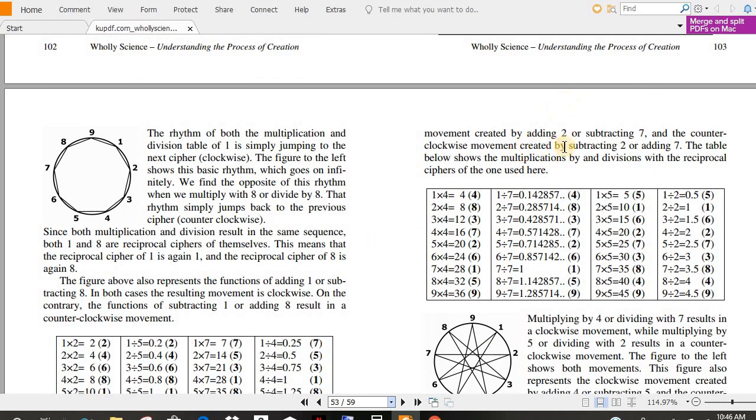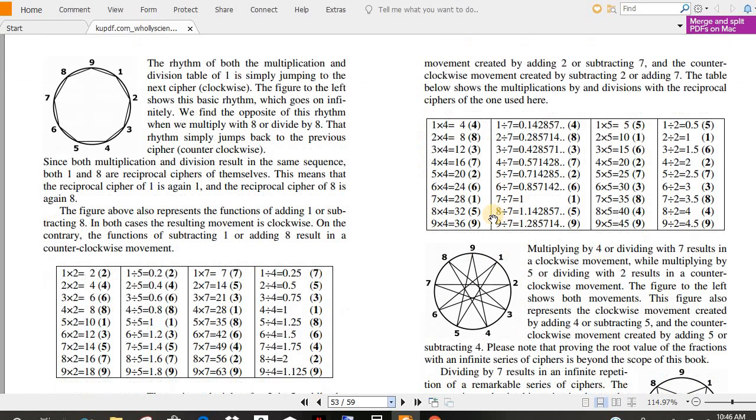Movement created by adding two or subtracting seven, and the counterclockwise movement created by subtracting two or adding seven. The table below shows the multiplications by and divisions with the reciprocal ciphers. So, four, eight, twelve, sixteen, twenty, see, two times four, three times four, so on and so forth.